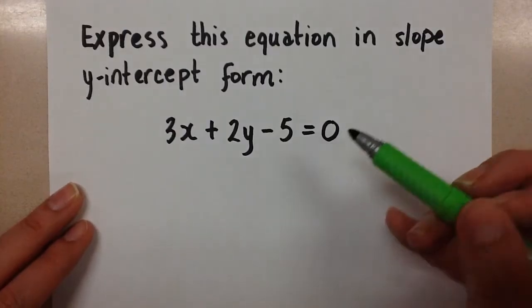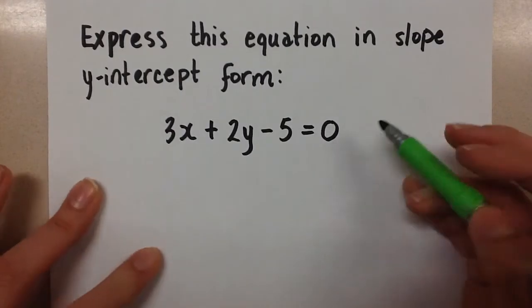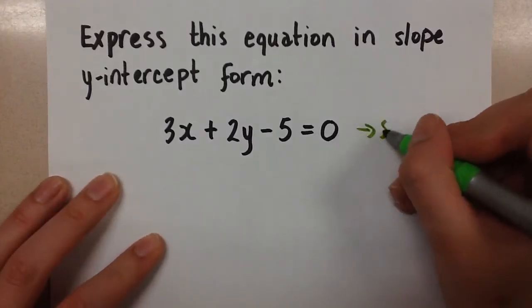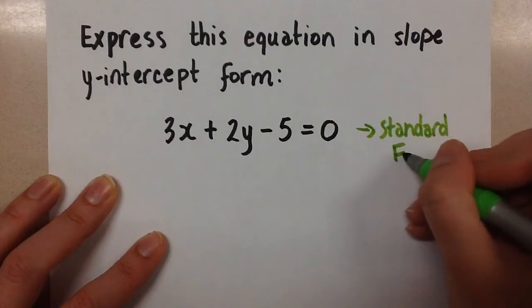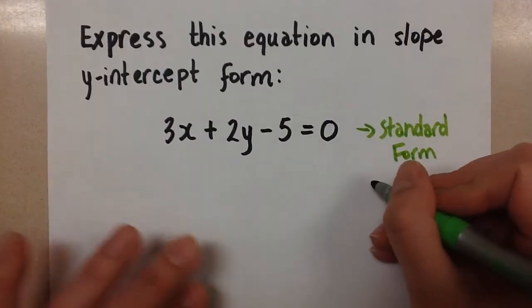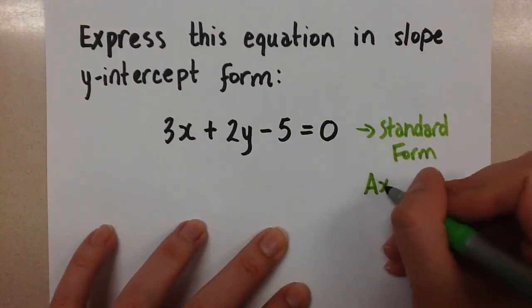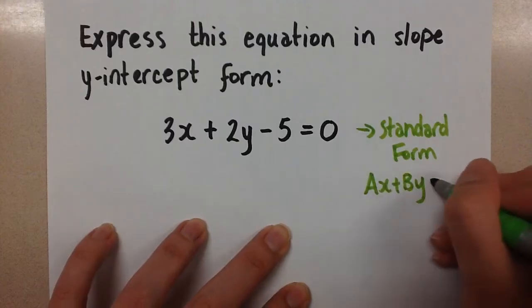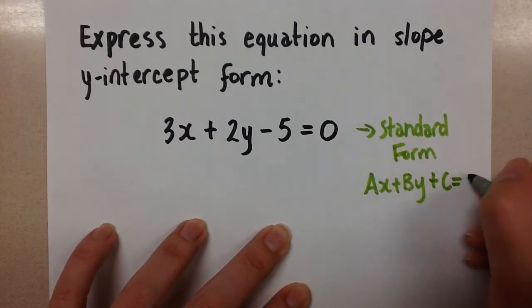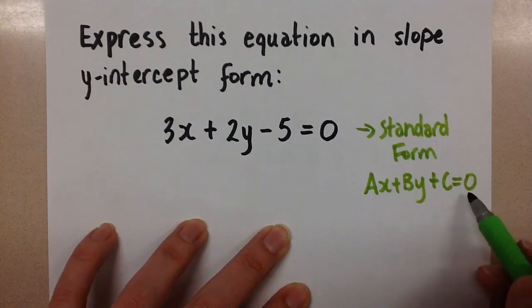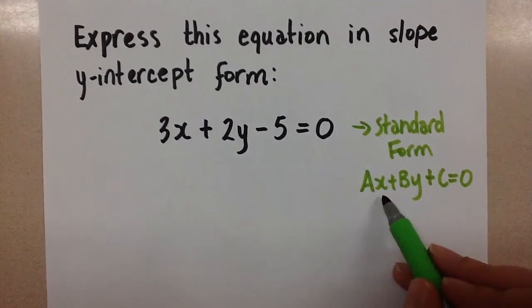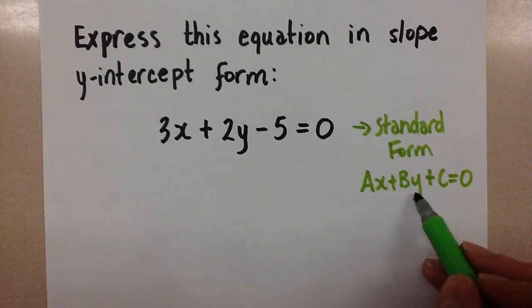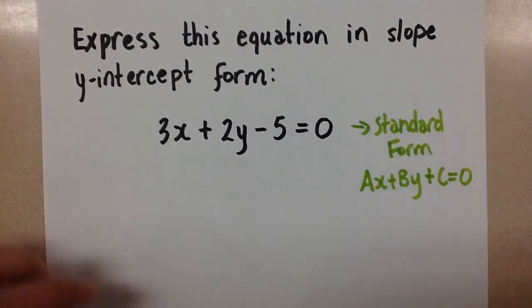So we're given this equation. This equation is in standard form. If you recall, the standard form is in this format: ax plus by plus c equals 0. Sometimes that c value is on the other side of the equal sign, but it's still considered standard form if the x and the y variables are on the same side of the equal sign.